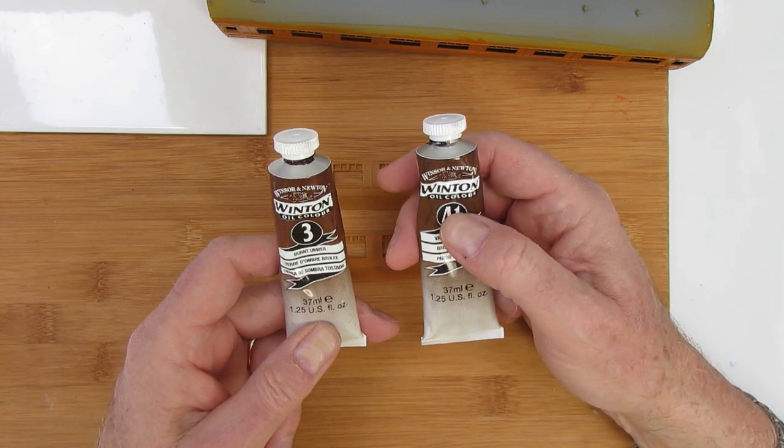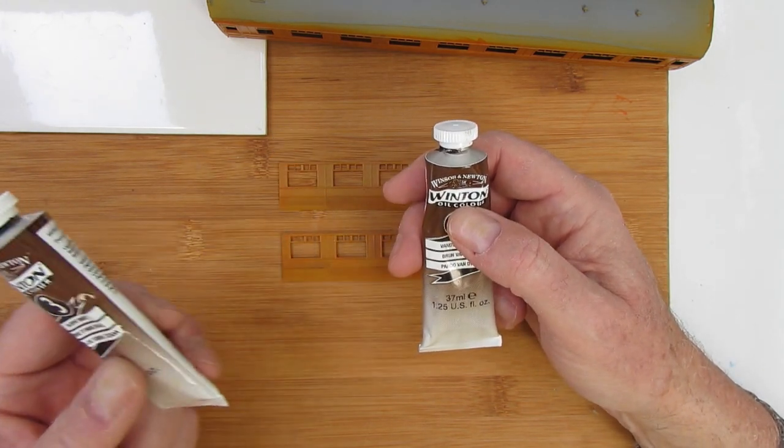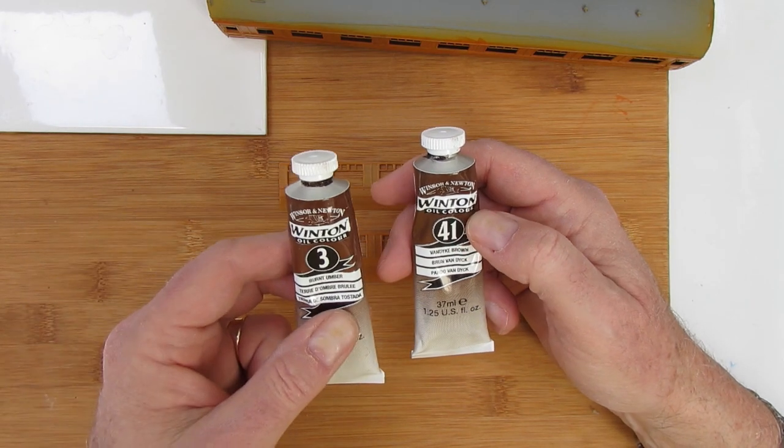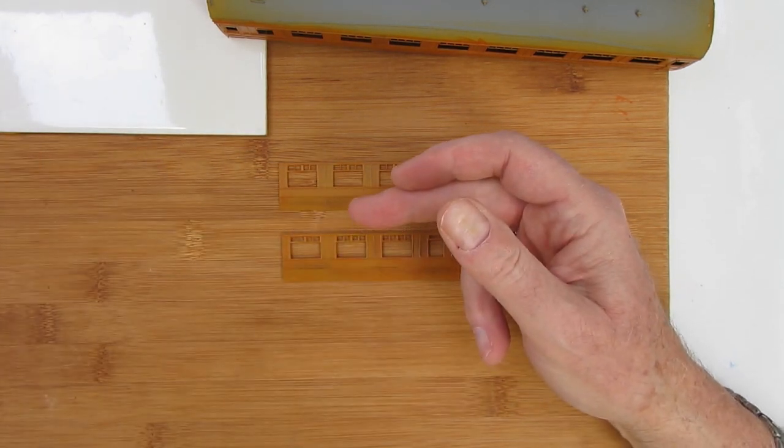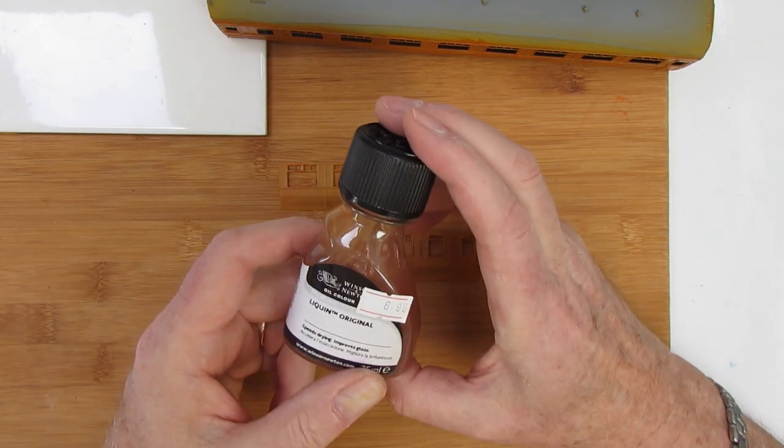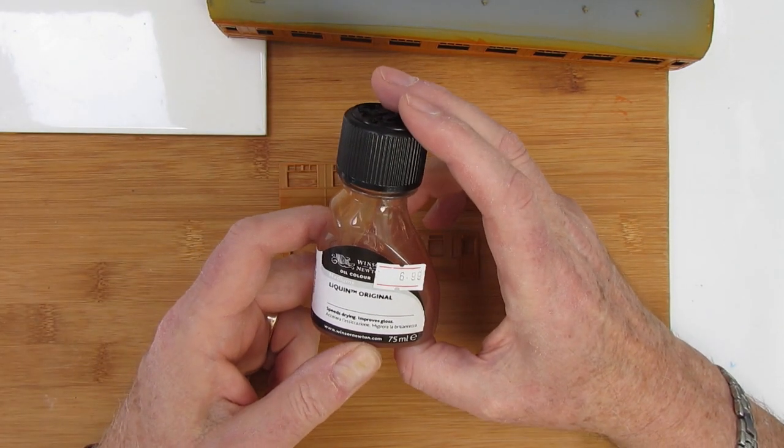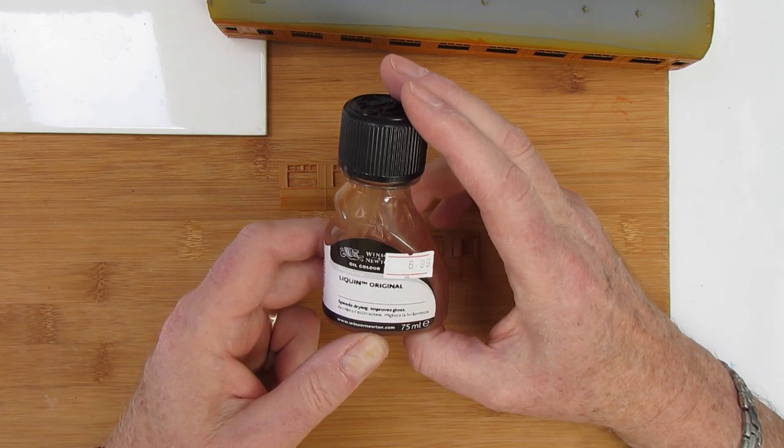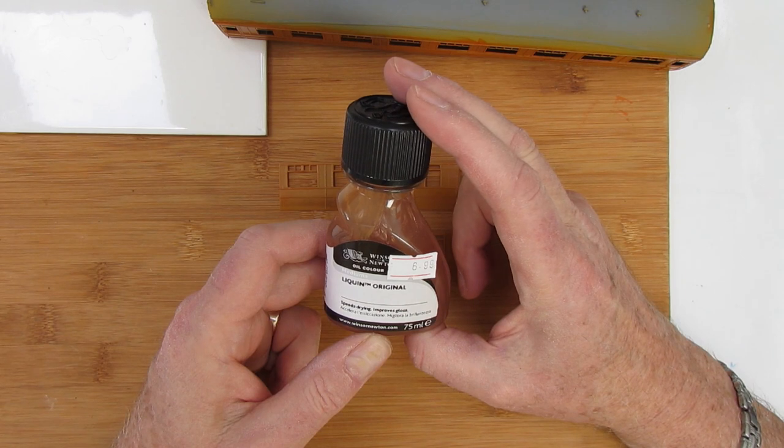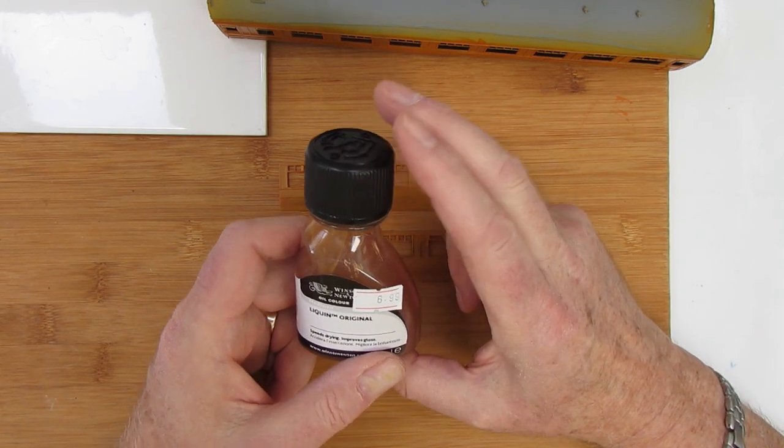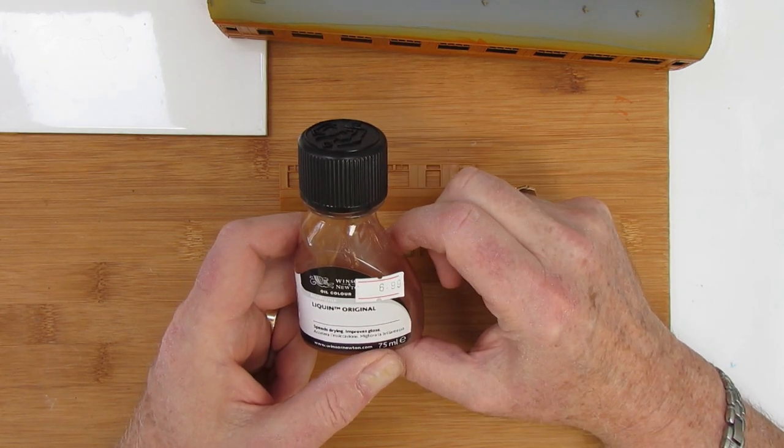These are oil colors. To use them straight from the tube they will have quite good coverage, but they can be increased in transparency by using liquid original. This also has the benefit of speeding up the drying time. I think we're probably ready to have a go at some teaking.